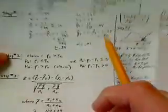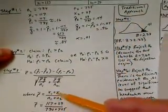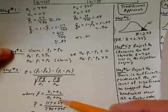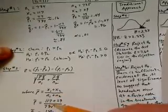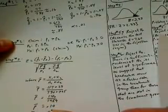To fill in that formula, we first calculate P̄, which is (X₁ + X₂) over (N₁ + N₂). So we have 117 plus 29 divided by 734 plus 725, giving 146 over 1,459, or P̄ ≈ 0.10. Q̄ is the complement, 1 minus P̄, or 1 minus 0.1, which equals 0.90.